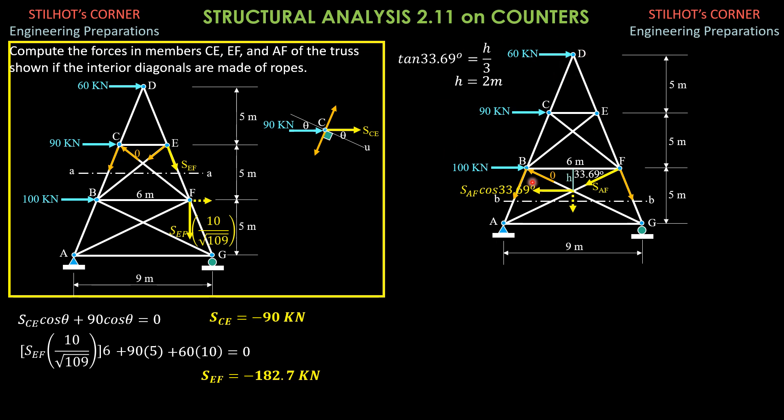Summation moments about D equals zero, clockwise moment positive. SAF cosine 33.69 degrees times 12, then it is equal to 90 times 5 plus 100 times 10. SAF can now be solved and it is equal to 145.2 kilonewtons. That's it for this problem.